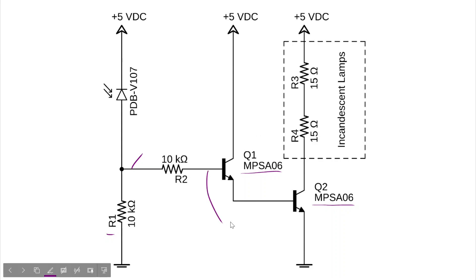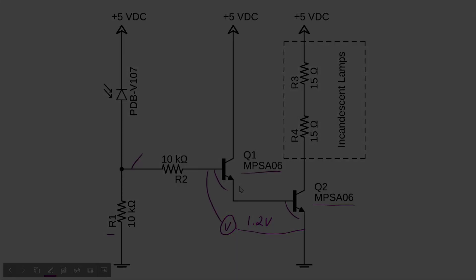One final comment about the Darlington pair. If you were to measure from this point to this point, right from the base of Q1 to the emitter of Q2, while the transistors were turned on, you would expect to see approximately 1.2 volts. Another way of saying that is you're going to see one diode drop for this transistor and one diode drop for that transistor.